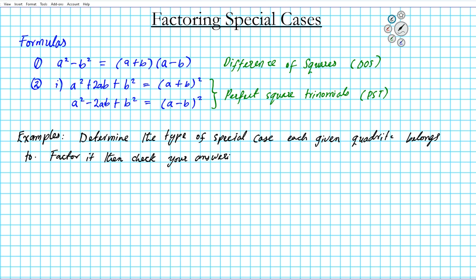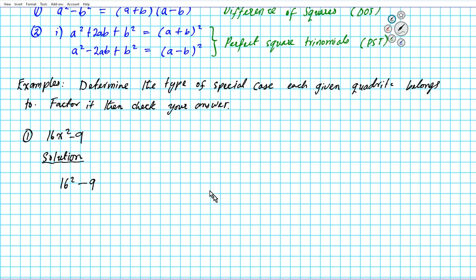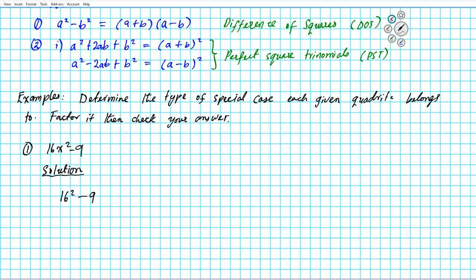Let's take a look at the first example. For number one we have the expression 16x² minus 9. Let's start out by determining what type of special case this is — is this a difference of squares or a perfect square trinomial? If you take a look at this expression, it's obvious that it's a binomial, so this is automatically not a perfect square trinomial. So this is a difference of squares.